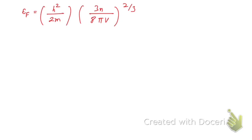So what we can do here: E_F to the power 3/2 will be equal to h-cubed — because if you multiply by 3/2, the 2 will cancel and we get h-cubed — divided by (2m) to the power 3/2, into 3N divided by 8πV.